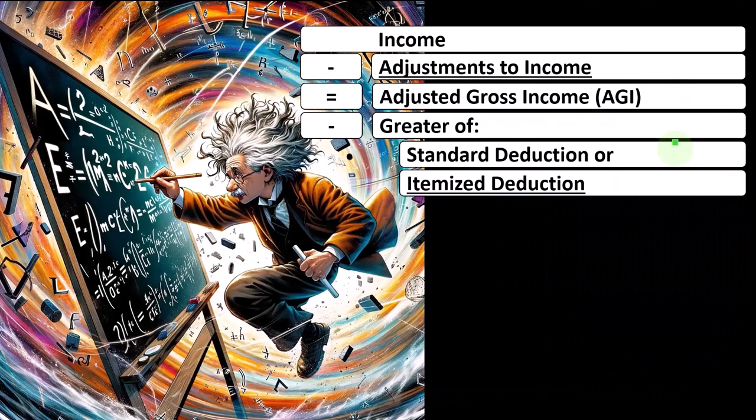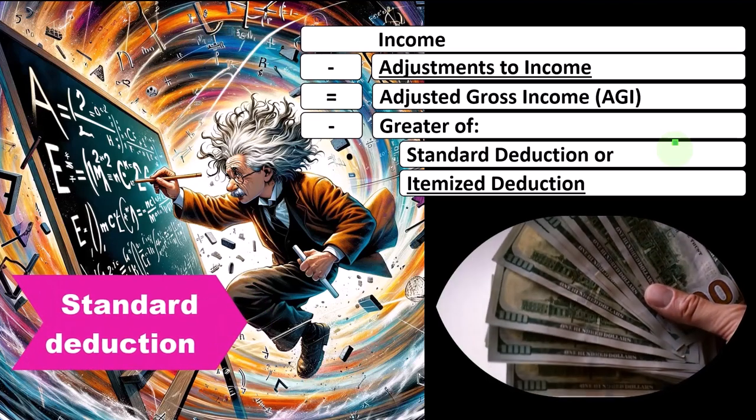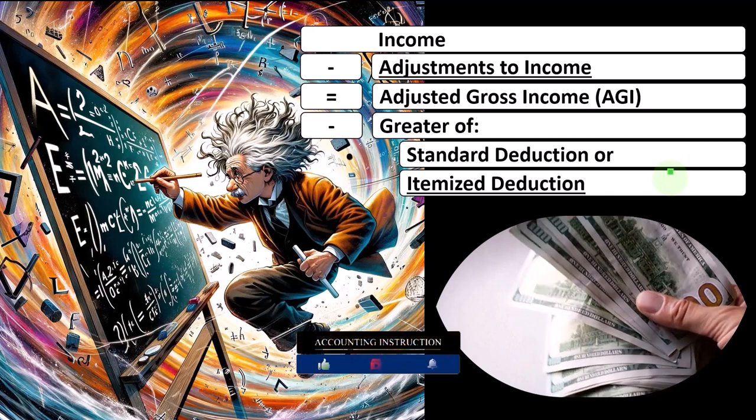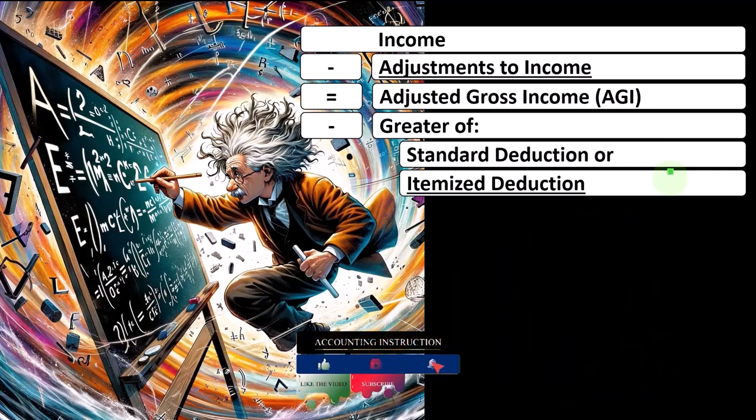So the standard deduction is one that everyone gets, no matter what, and that's usually going to be lower income individuals that are going to be taking the standard deduction. And then the itemized deduction is only if the itemized deductions are greater than the standard deductions, would you take the itemized deduction.